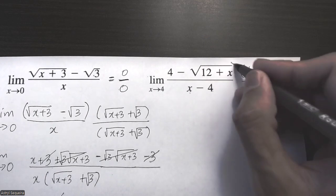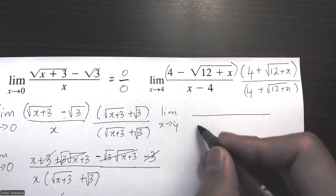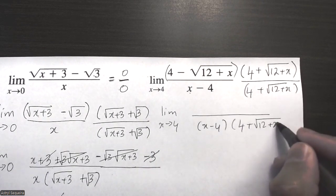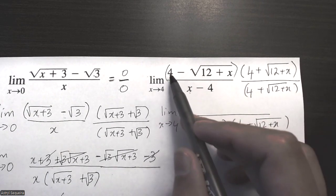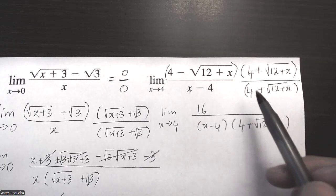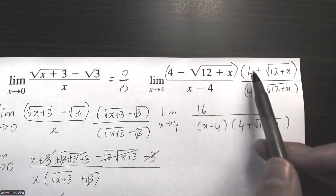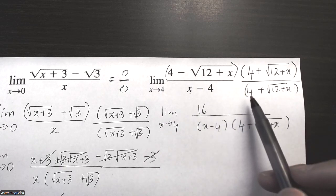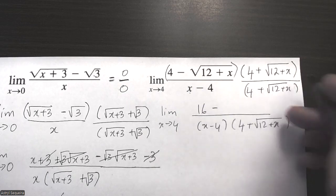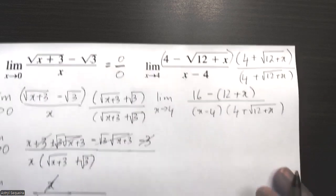Now I need to multiply out the two tops and leave the bottom in factored form. The bottom is going to be x minus 4 in a bracket, then four plus root of 12 plus x. For the top I'll expand: first term times first term is 16, the two middle terms will always cancel so I won't write them out, and then last times last — negative times positive is negative, and root 12 plus x times root 12 plus x is just 12 plus x. Make sure you keep it in a bracket or you'll get the wrong solution.